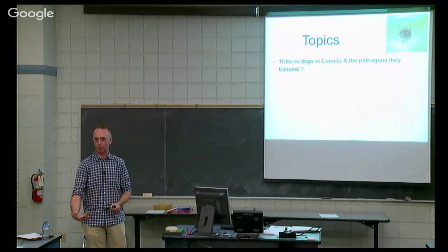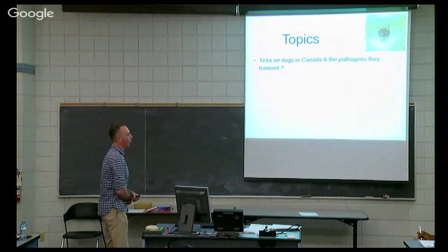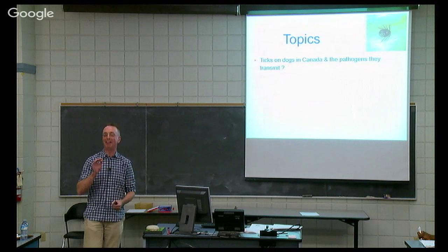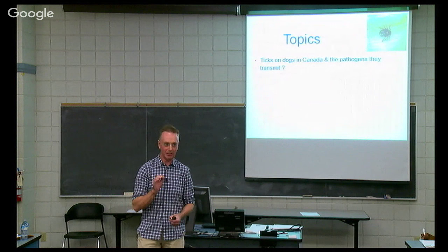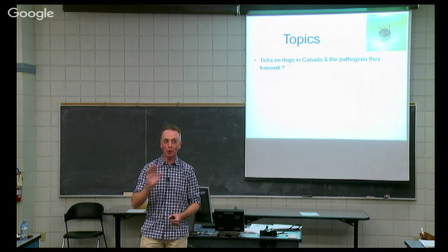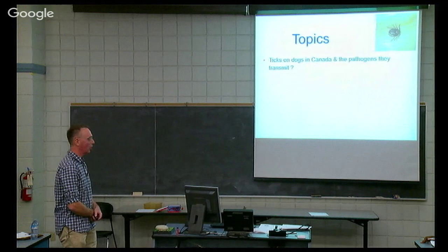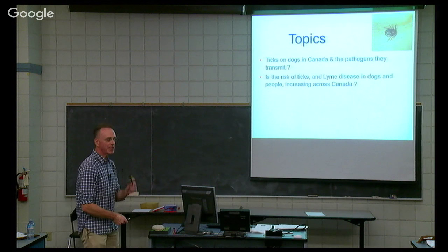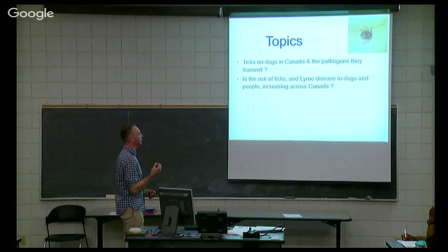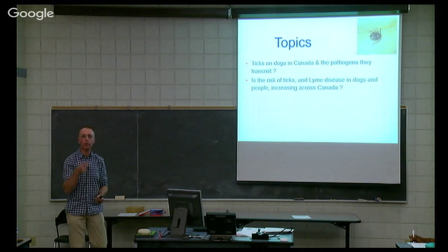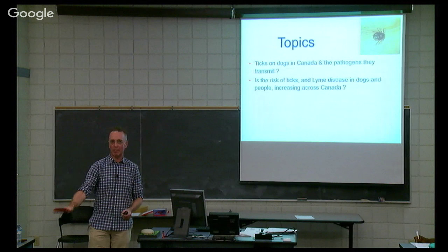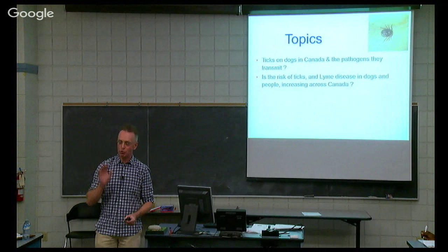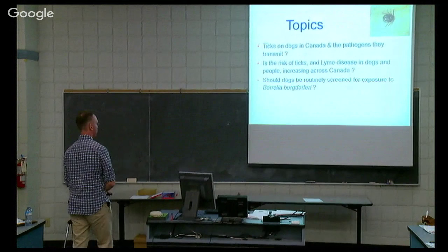What I want to introduce is that there is in fact more than one tick, certainly here in Ontario. Just because you find a tick should not result in a monumental panic attack, because there is another one that's important for other things but has nothing to do with the transmission of this pathogen. So what ticks do we find here, particularly in Ontario, and what do they transmit? Is the risk of ticks, and particularly the risk of Lyme disease development in both dogs and people, increasing across Canada?